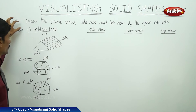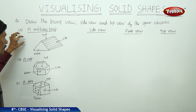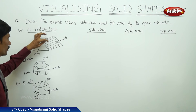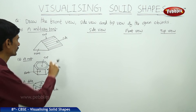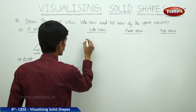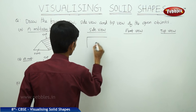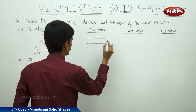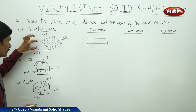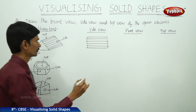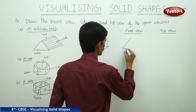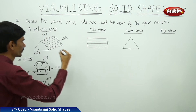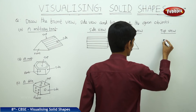Now let us draw the front view, side view, and top view of the given objects. The first figure is a military tent. The side view of the military tent appears as a rectangular shape, so we draw a rectangle for the side view. The front view shows a triangle, so the front view is a triangular shape. From the top, we again see a triangle.